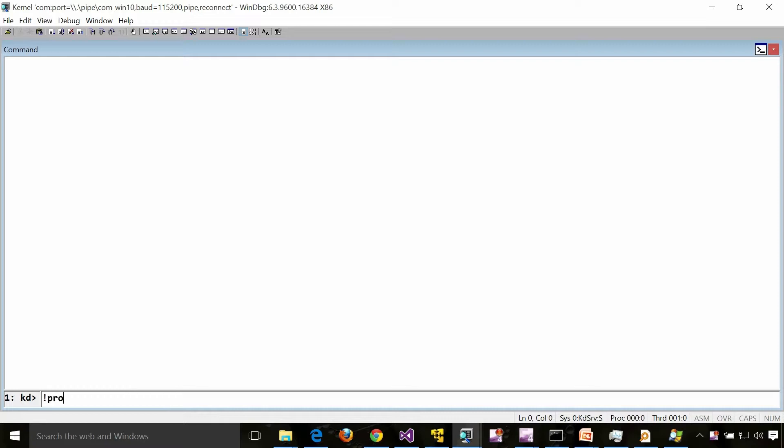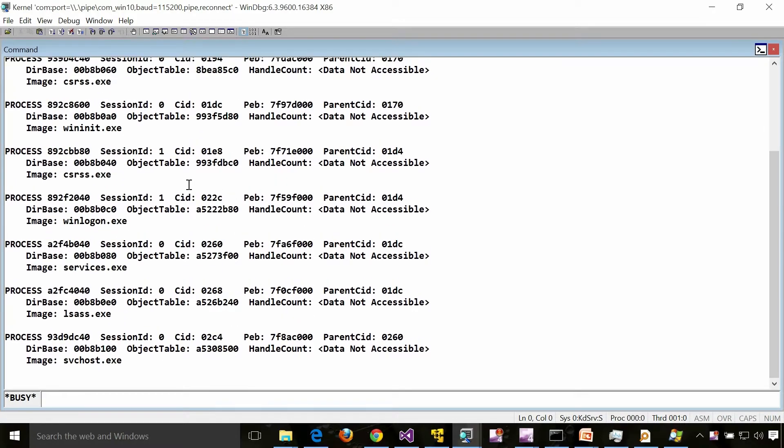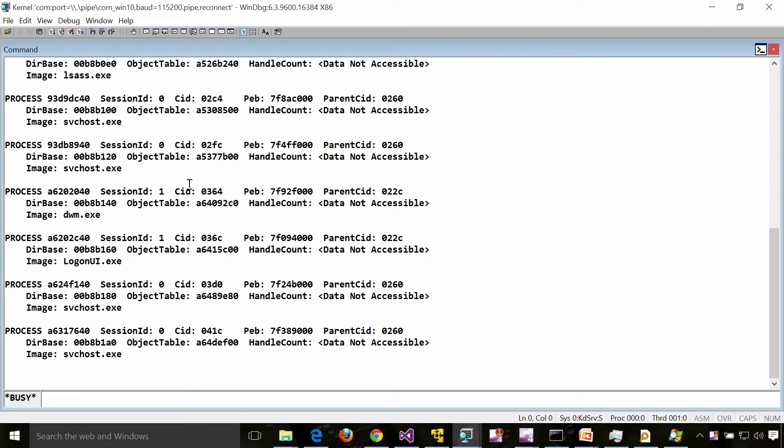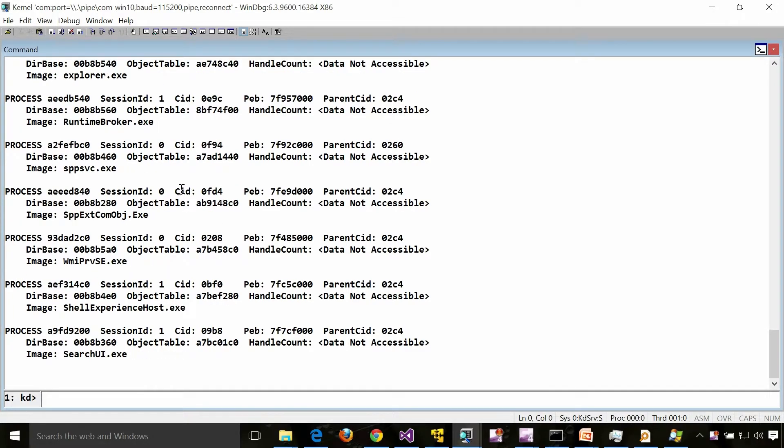A little bit more detailed information about a particular handle can be obtained using a kernel debugger. Whichever process you wanted to, switch into that particular process. So let's select a process. I'm selecting a random process which is SearchUI. I'm going to switch my context into that process.